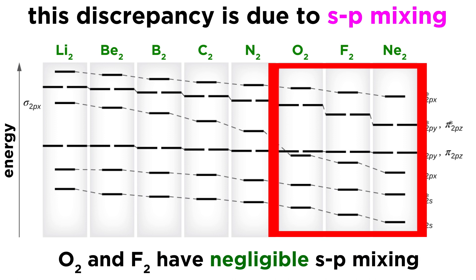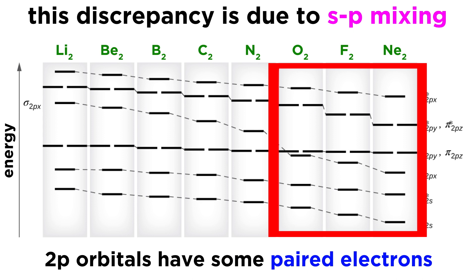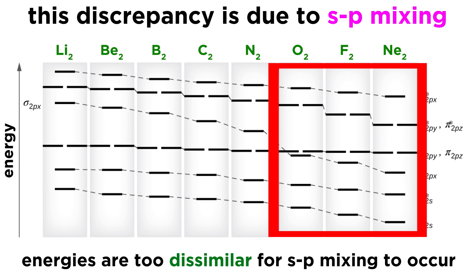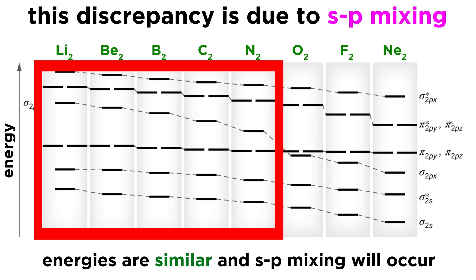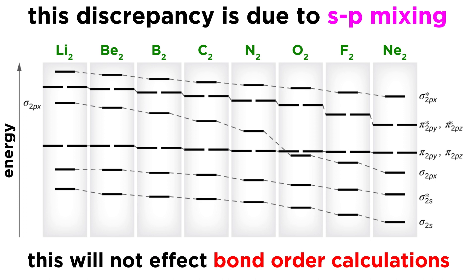As a result, we see the sigma-s and sigma-s star orbitals going lower in energy, and the sigma-p and sigma-p star going up in energy, so much so that the sigma-p orbital now sits above the pi-p orbitals. Molecules like O2 and F2 have negligible S-p mixing because the two-p orbitals in those atoms have some paired electrons. This raises the energy of the two-p orbitals, making them too dissimilar to the energy of the two-s orbital to allow mixing to occur.